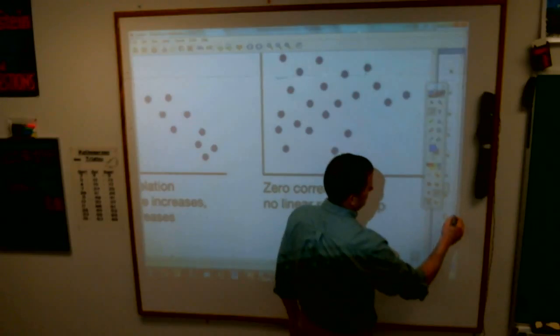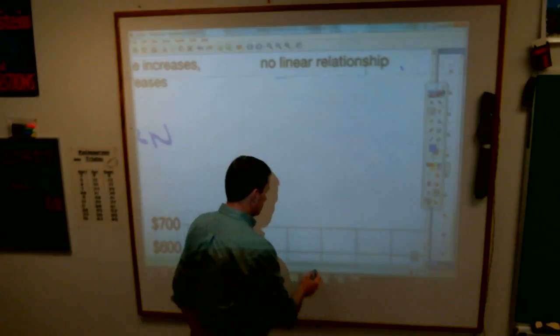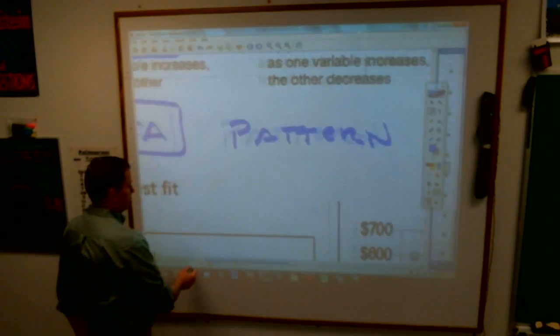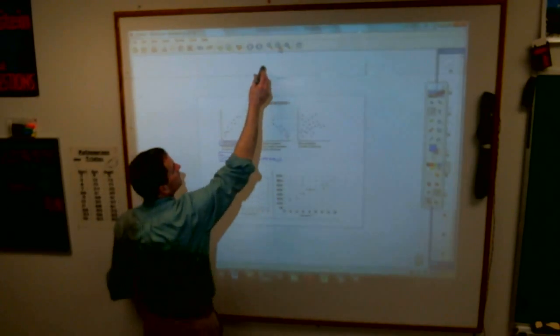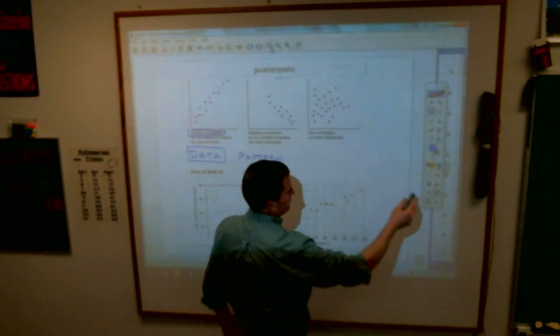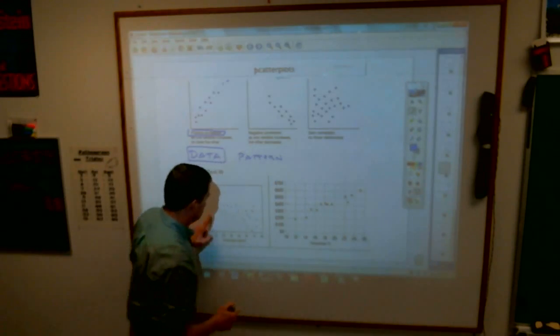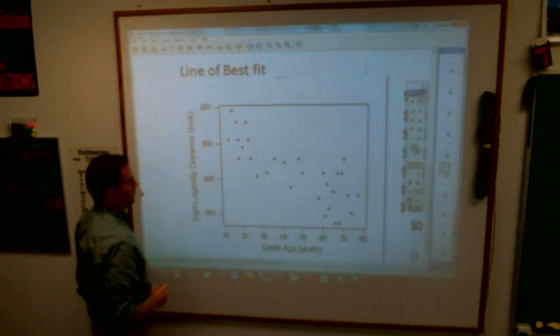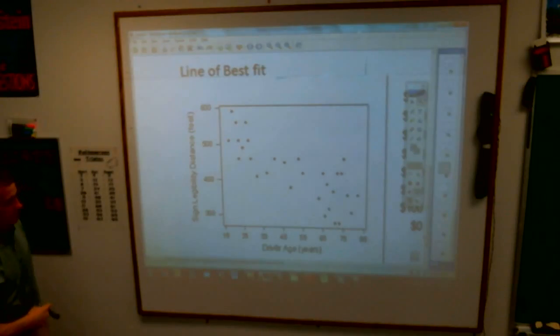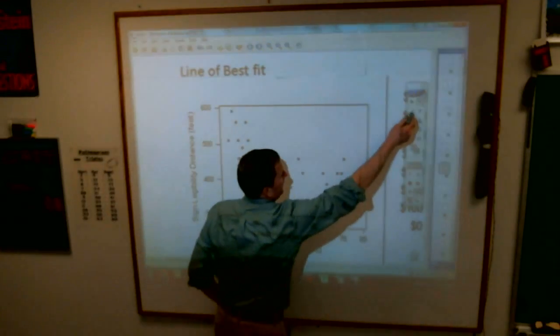Now when you do have a correlation though, and that's what the rest of those things on your little paper are, you can use these. There is such a thing as called the line of best fit. First of all, positive or negative correlation there. It's a negative correlation because it really looks like the dots are going down. We have what's called the line of best fit.